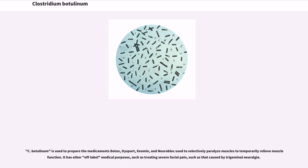C. botulinum is used to prepare the medicaments Botox, Dysport, Xeomin, and Neurobloc used to selectively paralyze muscles to temporarily relieve muscle function. It has other off-label medical purposes, such as treating severe facial pain, such as that caused by trigeminal neuralgia.